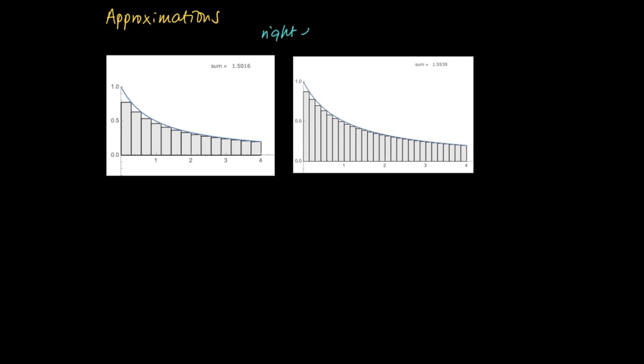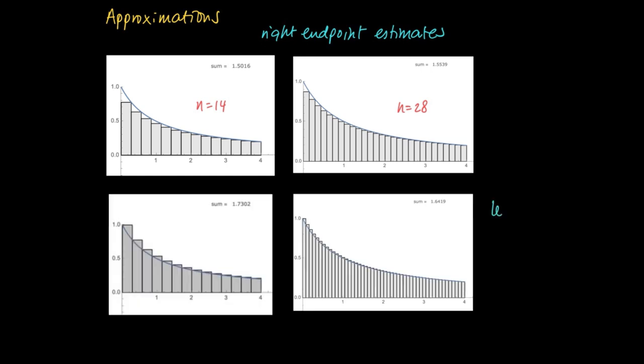And so here we see two figures in which we use the right endpoint sampling method. And we see that by refining the procedure, from n equals 14 on the left-hand side and 28 rectangles on the right-hand side, that by refining, we're closing in on something that we would like to call the area.